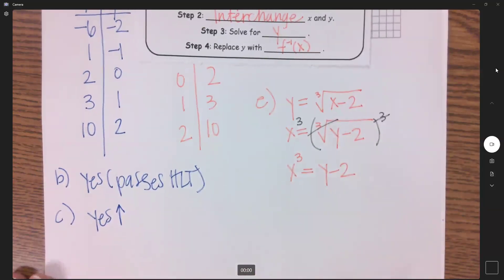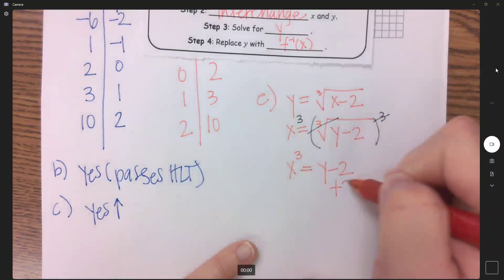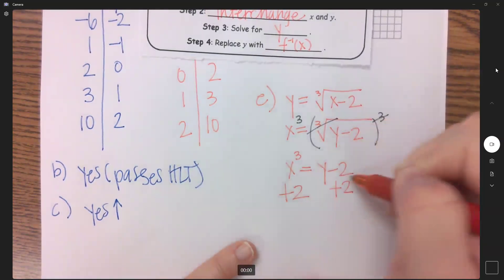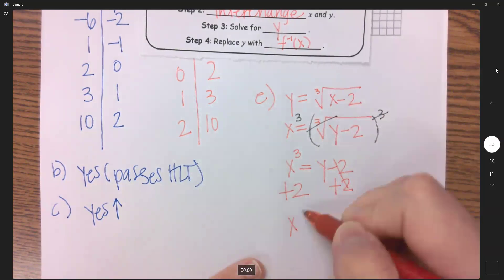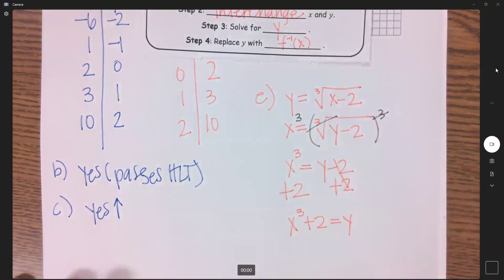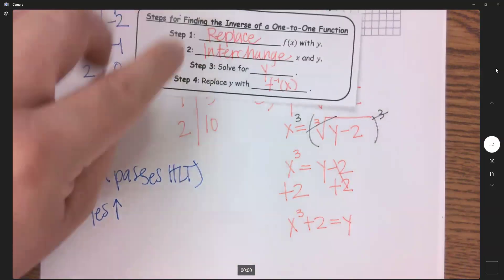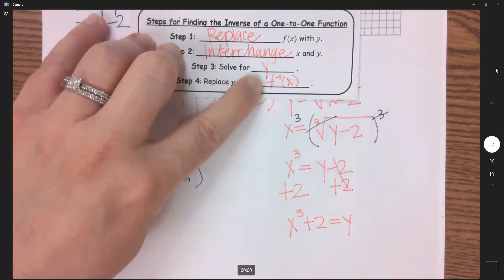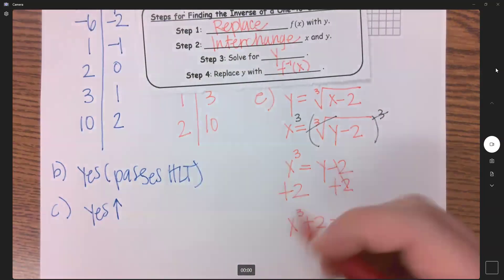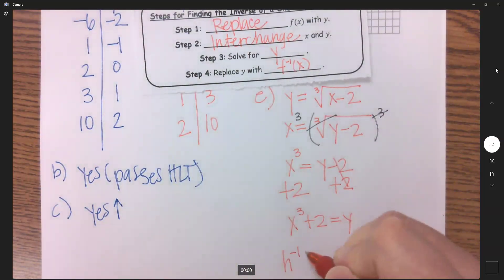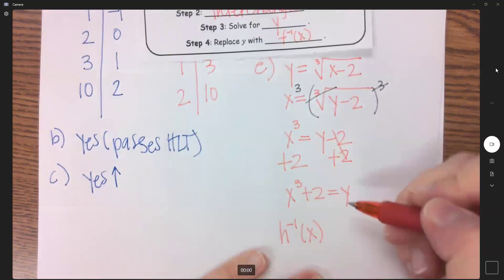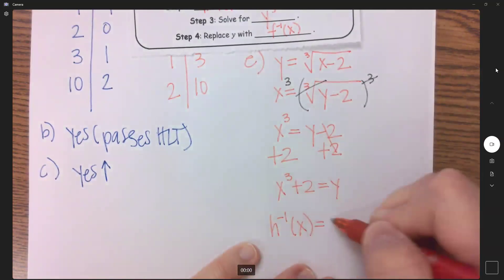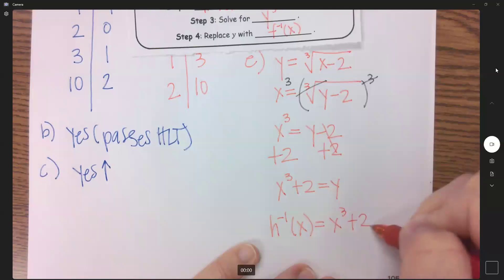So now my last step is to add our 2 over. Those are unlike terms. So that's X cubed plus 2 equals Y. Do not stop there. If you want full credit, you need to replace your Y with your inverse notation. So because we had H of X, this is now the inverse of H equals X cubed plus 2.